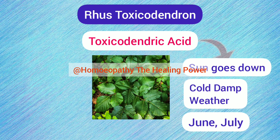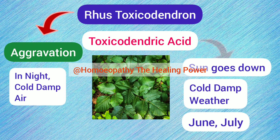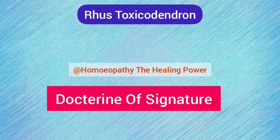The symptoms of Rhus Tox also get aggravated at night — that is when the sun goes down — and also in damp cloudy weather. In fact, most of the symptoms of Rhus Tox originate from cloudy air, and this time is seen in the months of June and July. Starting from the word meaning itself, whatever we have studied is nothing but the doctrine of signature in homeopathy, which will help practitioners prescribe Rhus Tox and students to remember it for their exams.